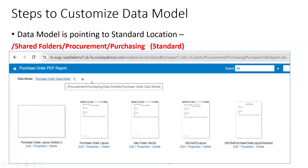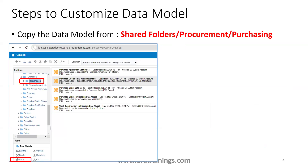Let us see the screens for this. In this example, we have already customized the template, but if you observe the data model, it is still pointing to the standard data model location. Now we'll see what happens when you copy the data model from the standard location to the custom location.